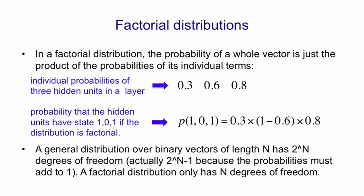The probability of a configuration of the hidden layer is just the product of the individual probabilities — that's why it's called factorial. In general, a distribution of binary vectors of length n will have 2 to the n minus 1 degrees of freedom. A factorial distribution, by contrast, only has n degrees of freedom. It's a much simpler beast.